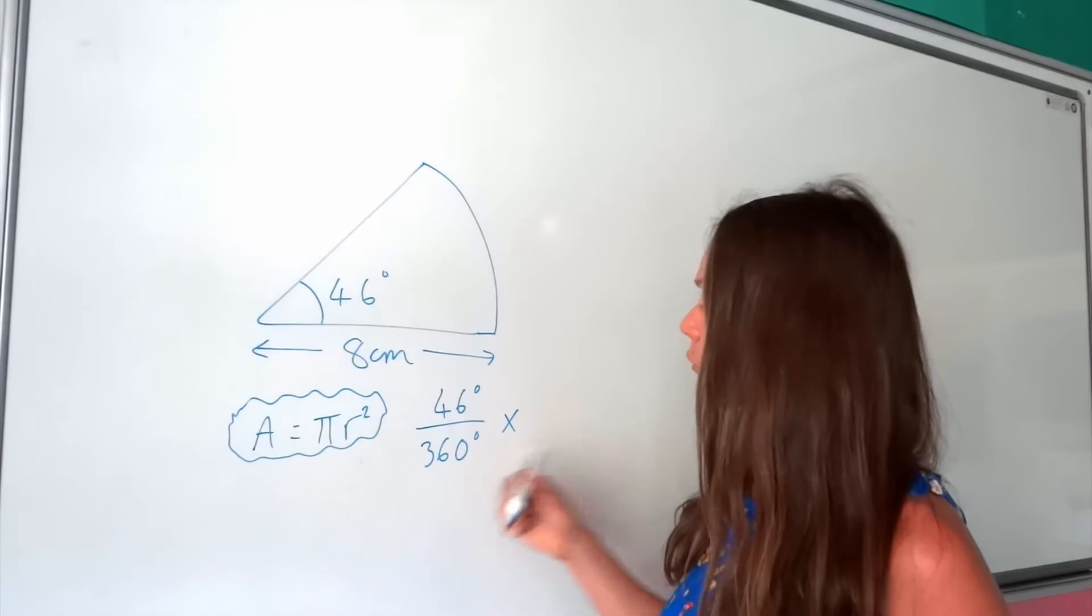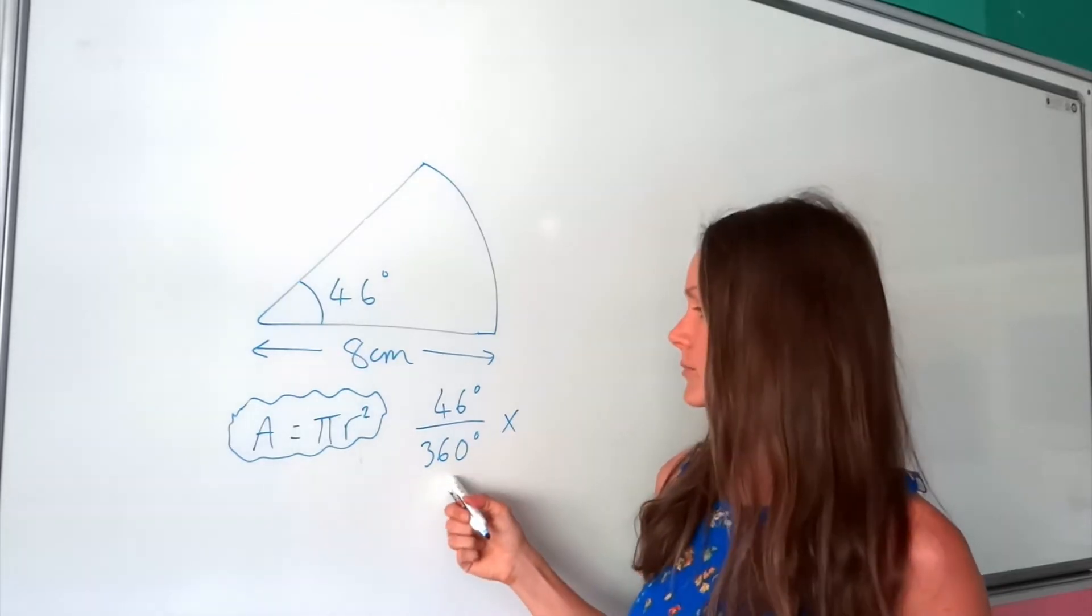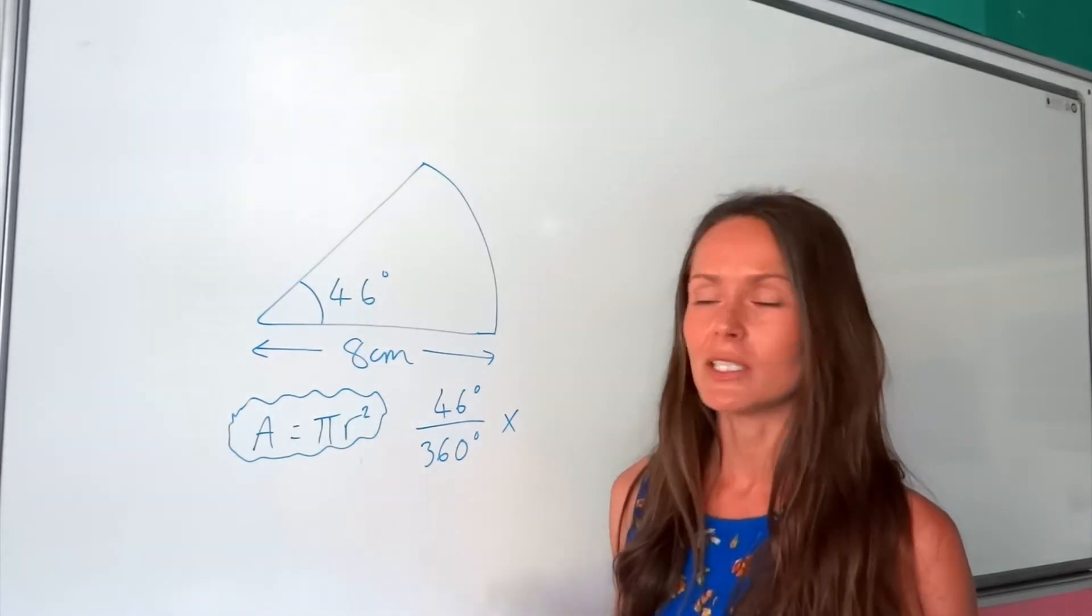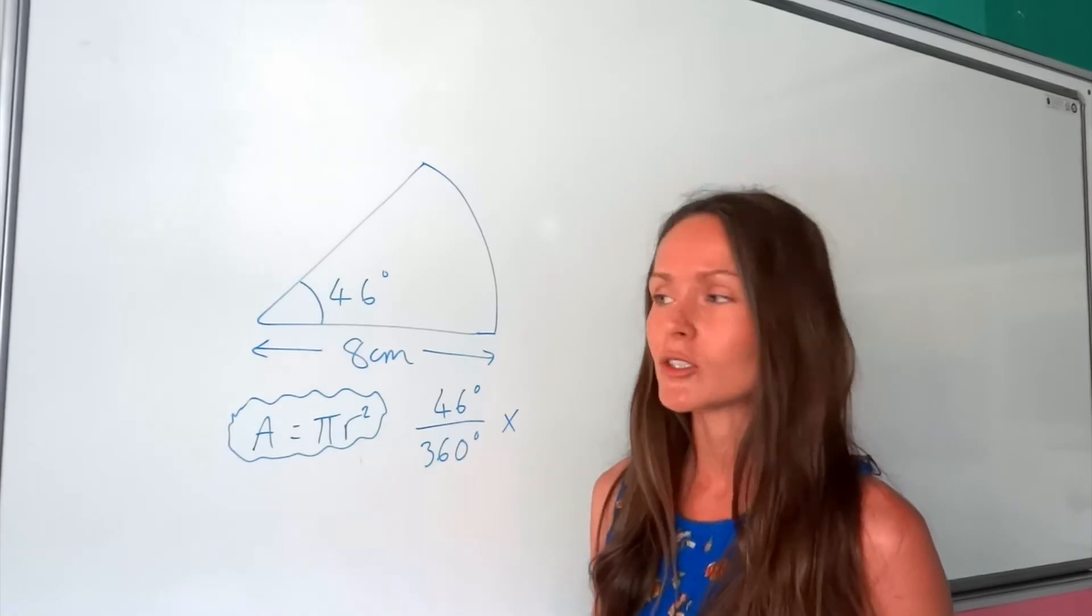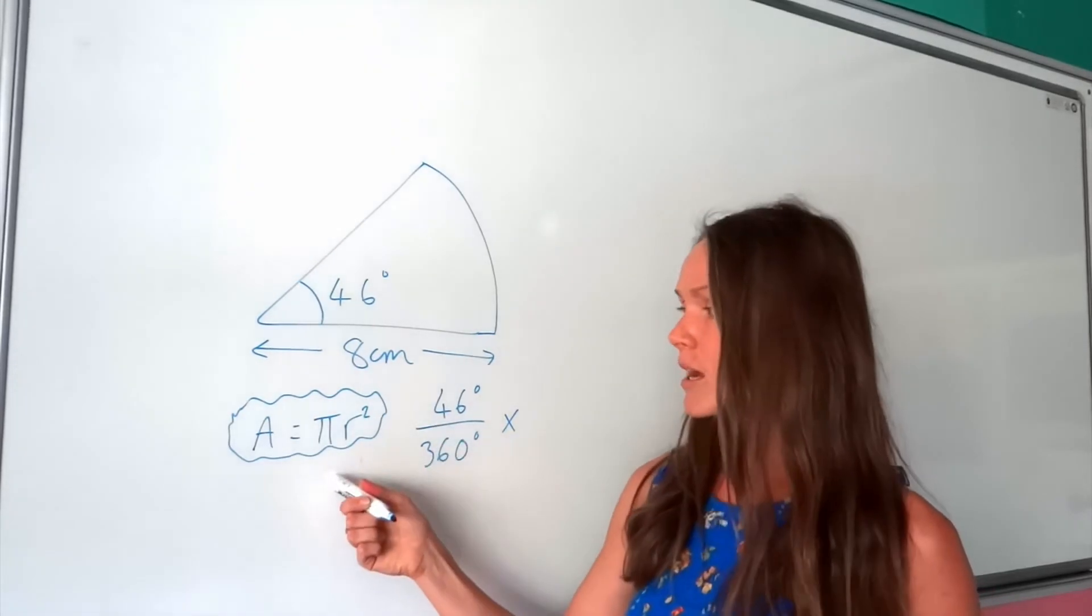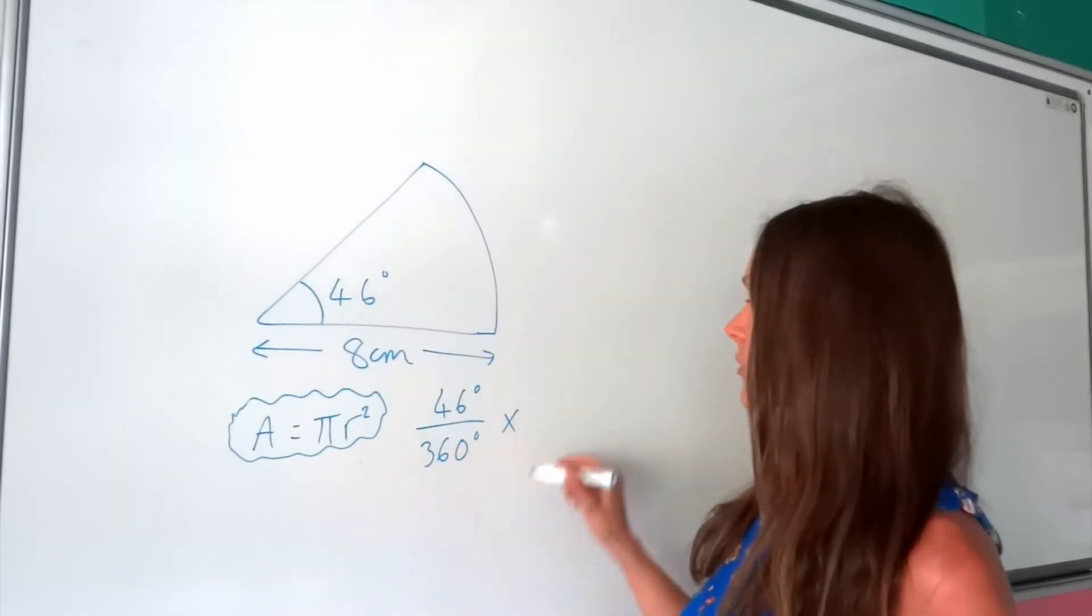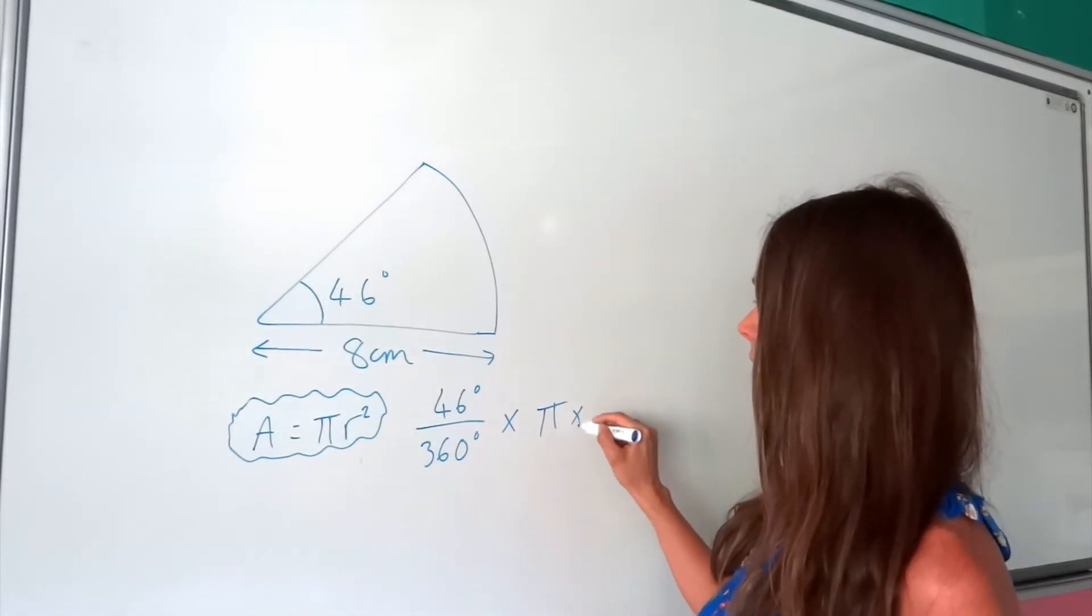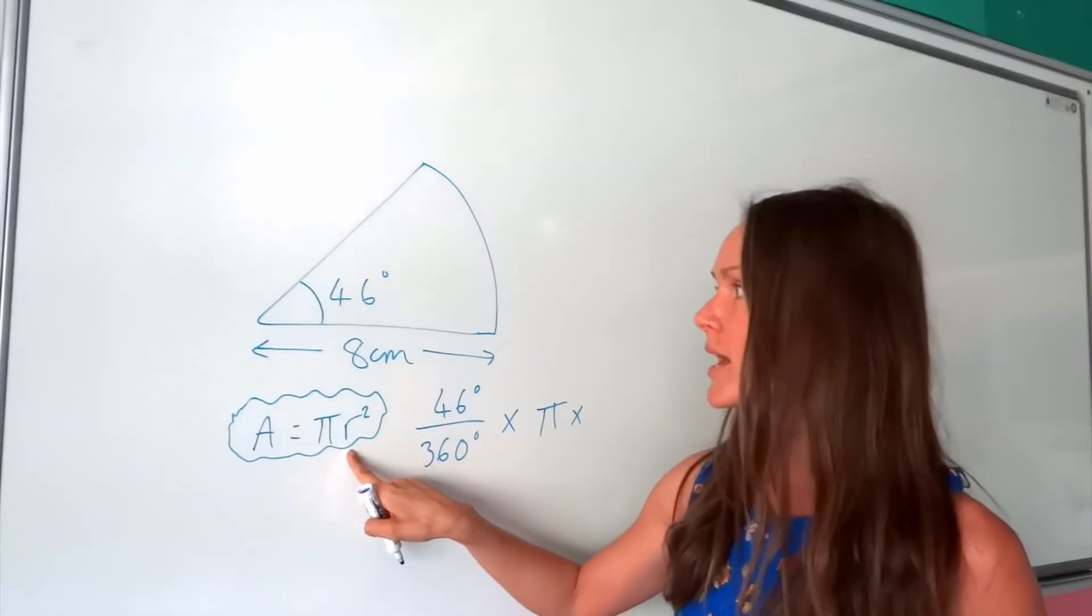Now we've got the fraction of the circle here. You could simplify it, but we don't need to. We're going to use the calculator for this question. All you need to do next is multiply that with the formula for the area of a circle. So I'm going to times that by pi, and then I need to times by the radius squared.